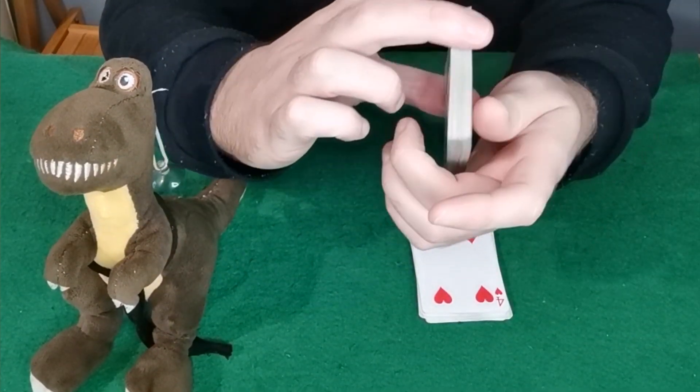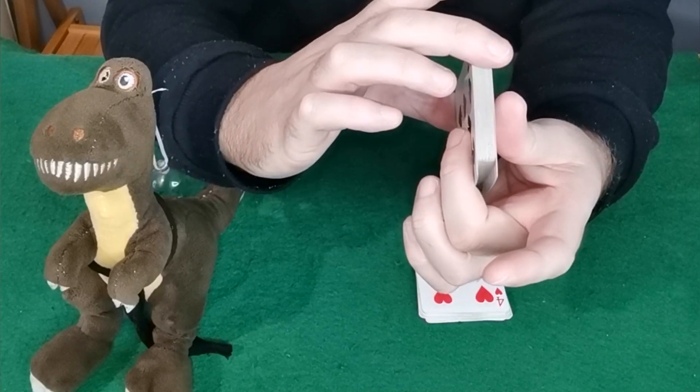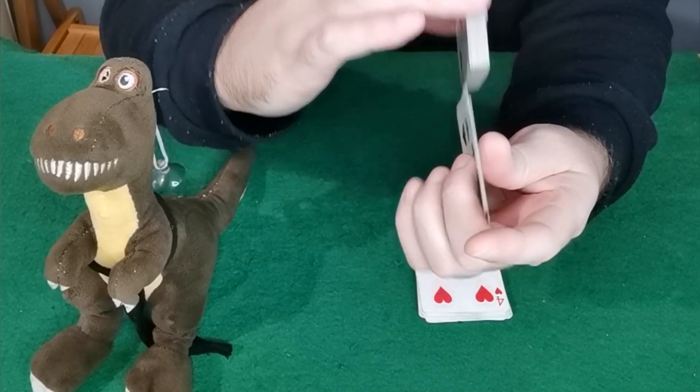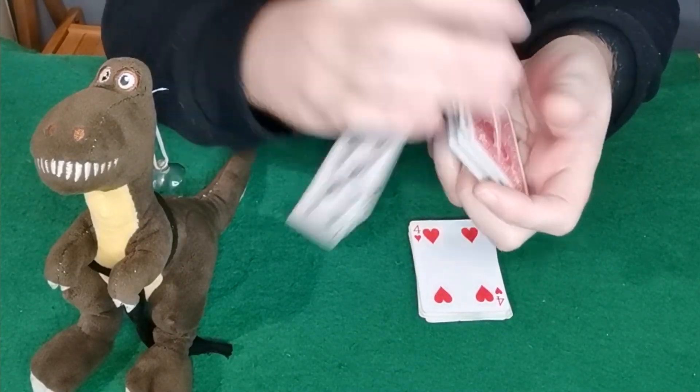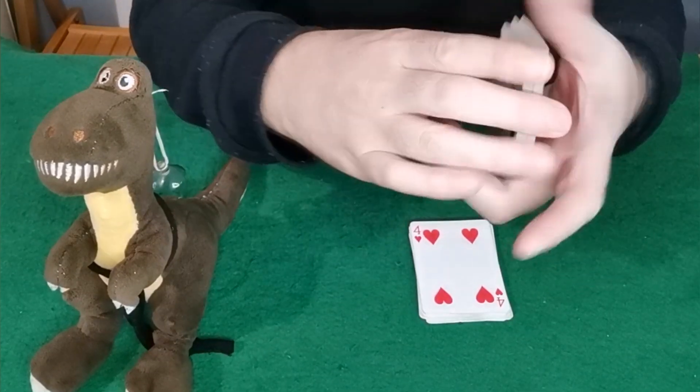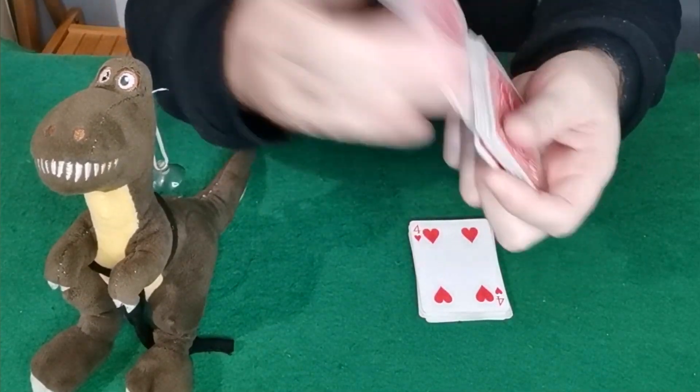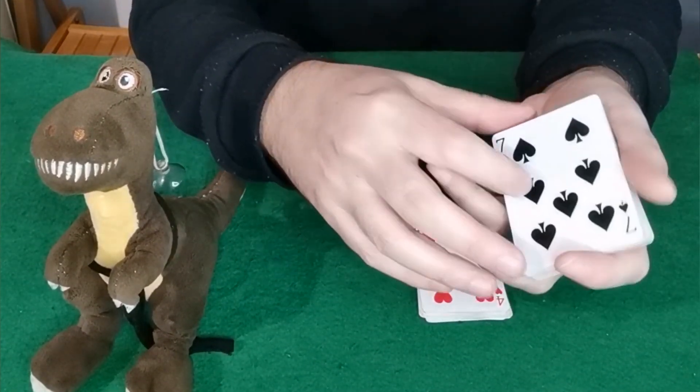Now what you're going to do is you're going to do what's called milking the deck. So you're going to keep the bottom one and the top one just like that and you're going to overhand shuffle it as well. So again that's slow motion but fast it'll look just like this. So it looks like you're mixing up the cards but you're actually keeping their card at the bottom.